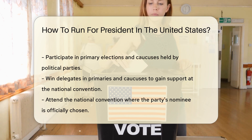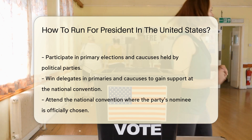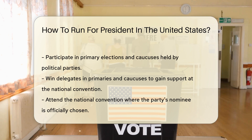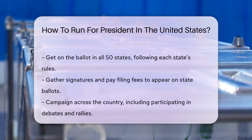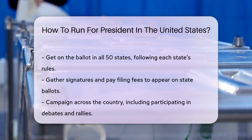You will need to participate in primary elections and caucuses. These are held by political parties to choose their nominee. Winning delegates is key in these primaries and caucuses — delegates are representatives who support you at the national convention.